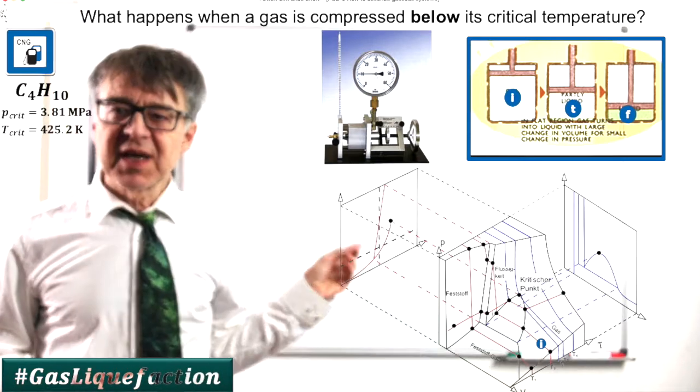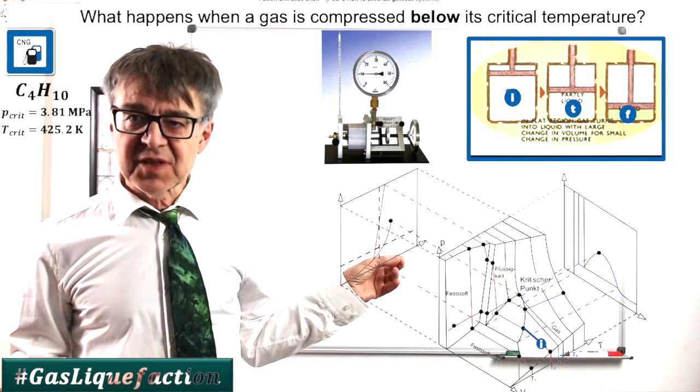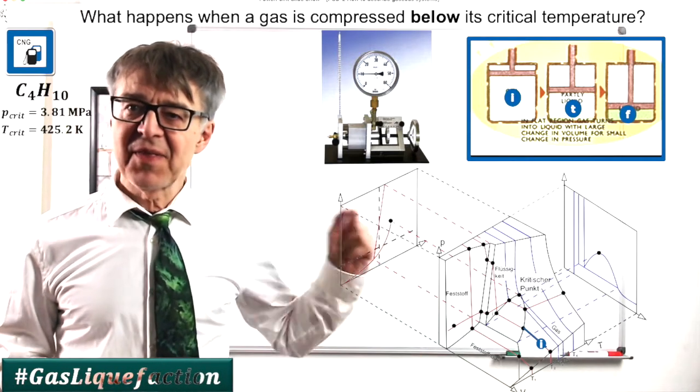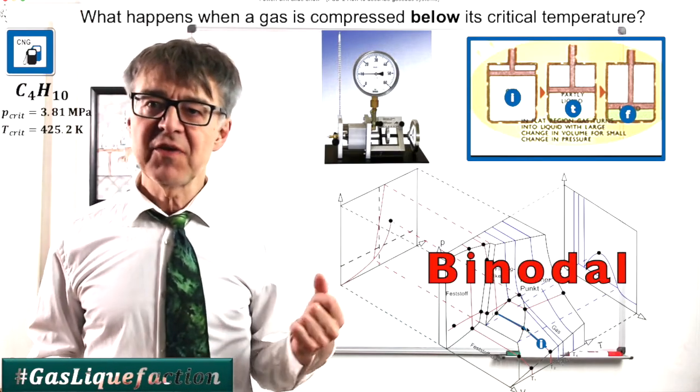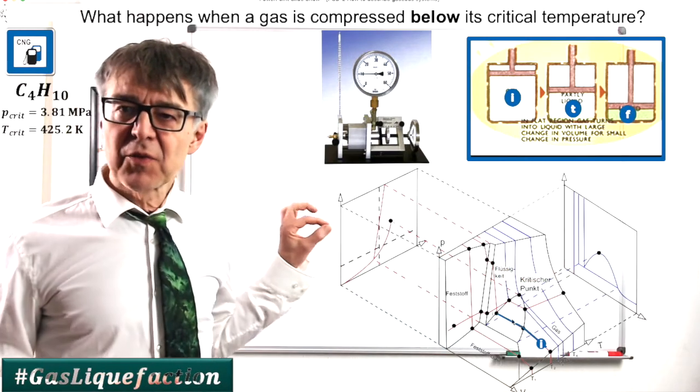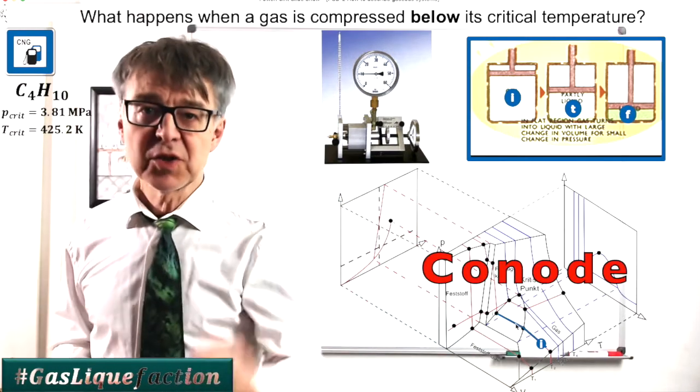In the state diagram, it looks like that. Starting from I, the pressure rises, then the isotherm intersects the so-called binodal, here the dew point curve, and then the system moves through the two-phase realm on a conode.